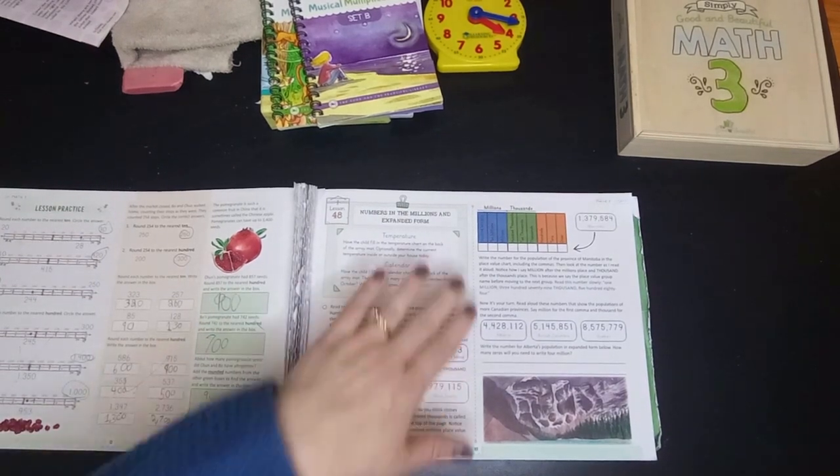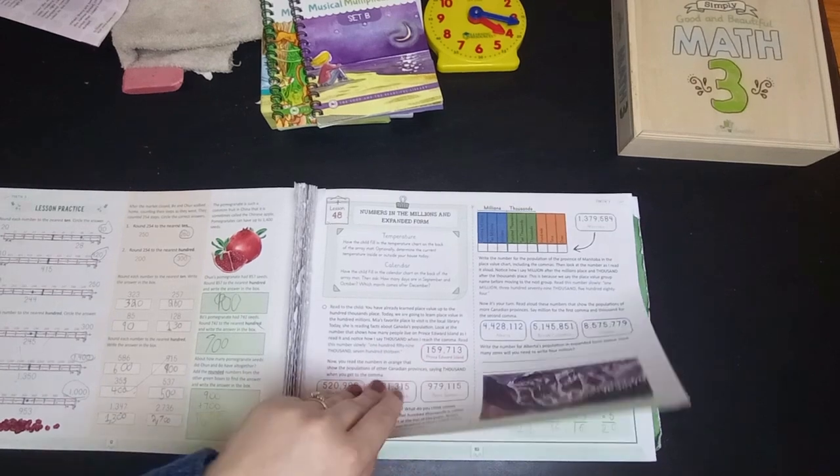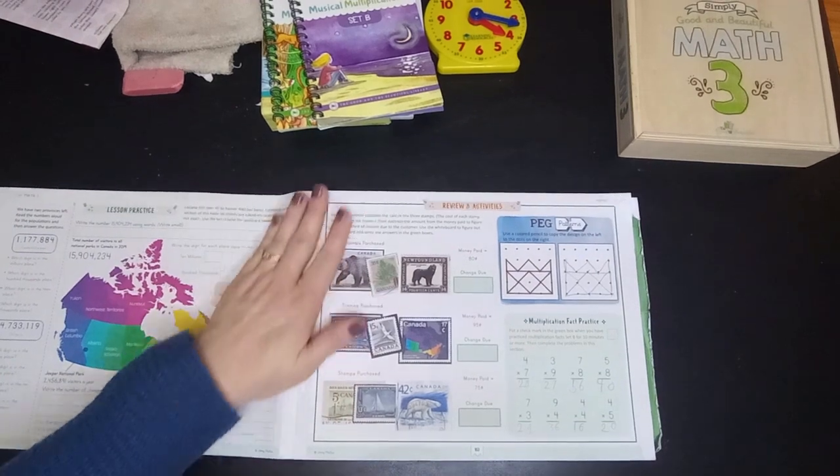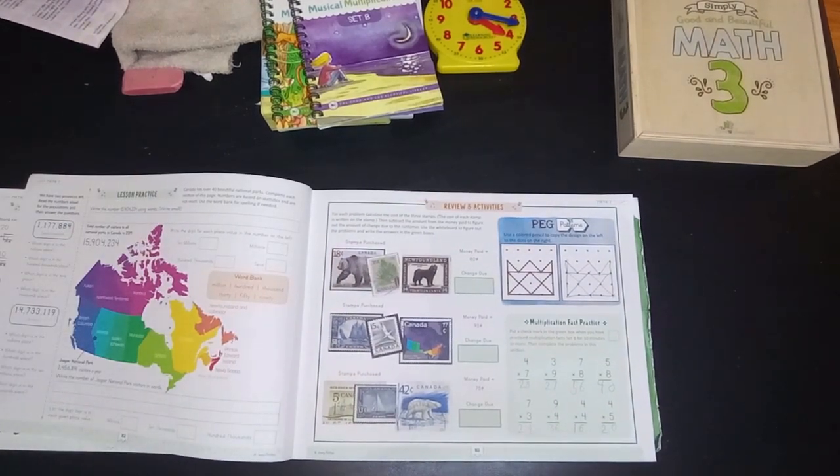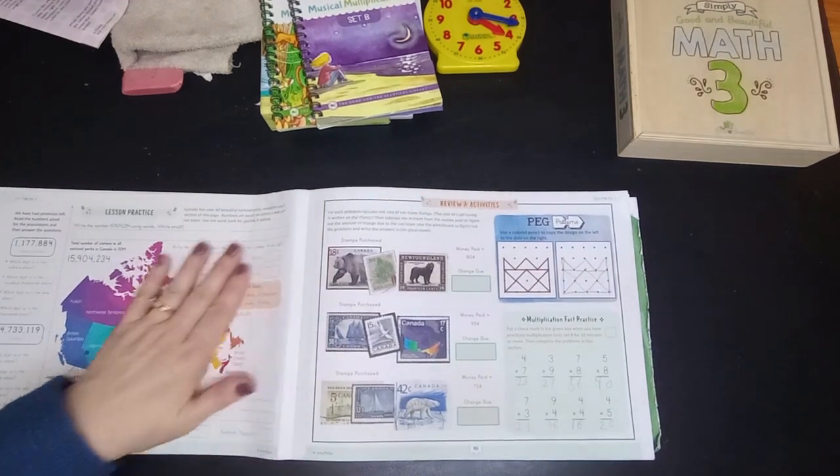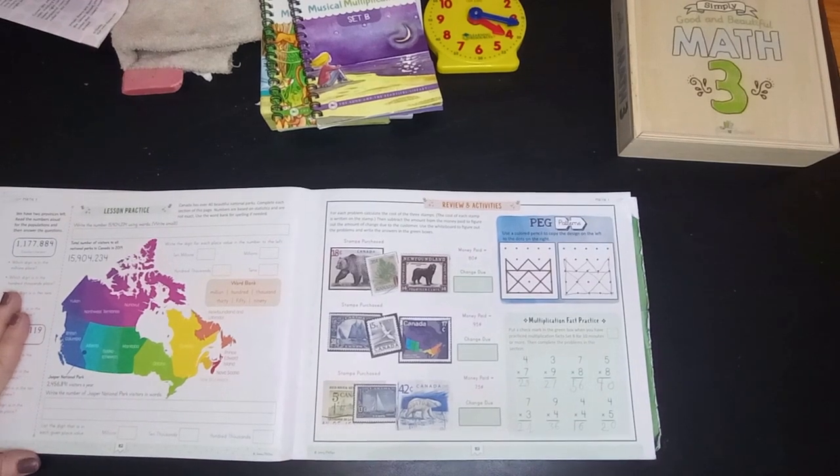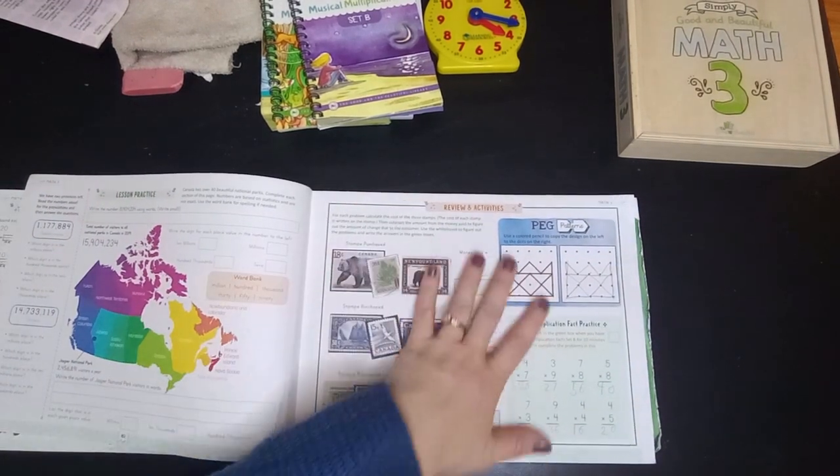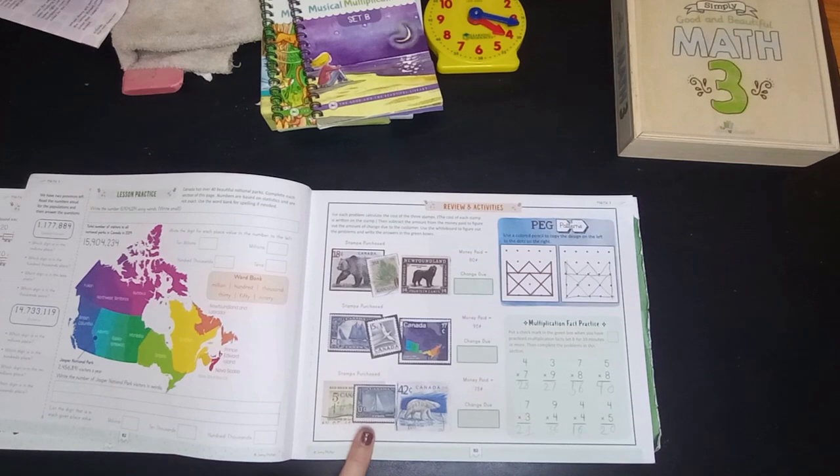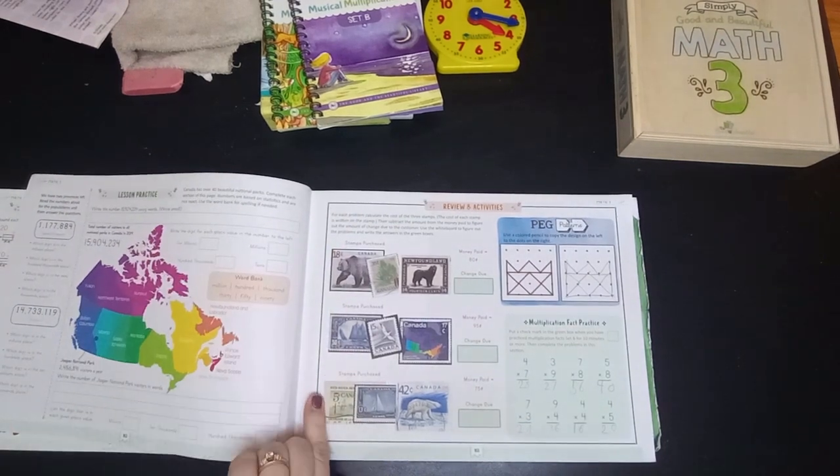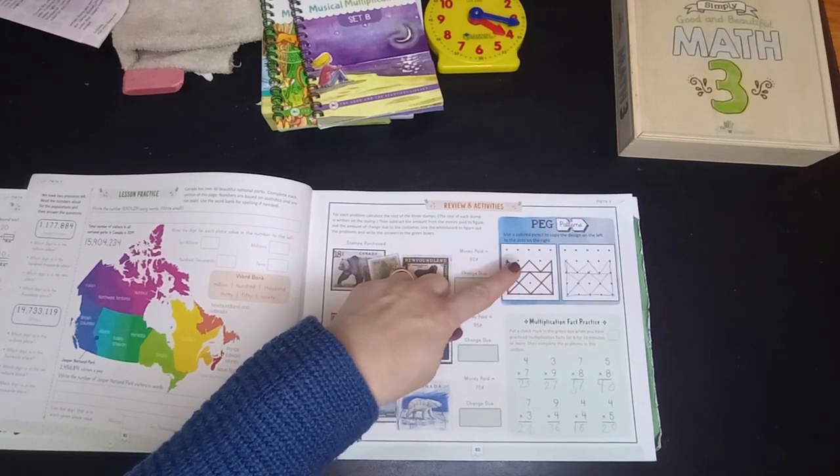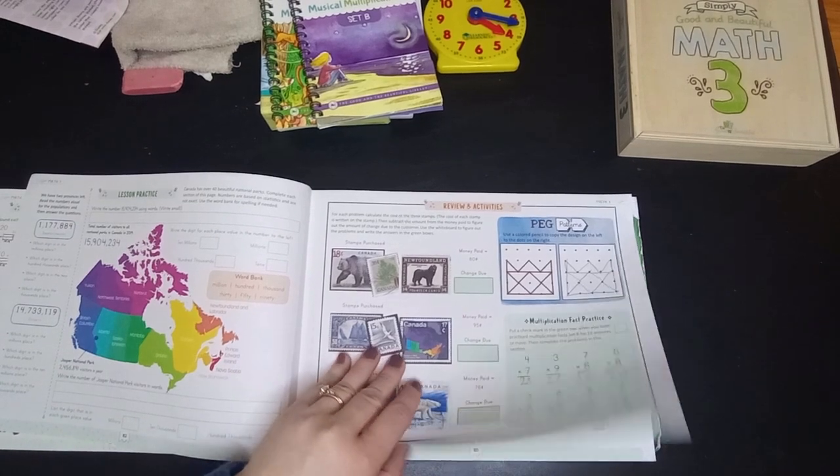And then here, so this is kind of fun, because it shows them a map, and they're starting to learn some other things and be exposed to some different things, like provinces in Canada, not something I normally would spend time talking to my kid about, but it's kind of nice, because knowing those is somewhat useful. And then again, the review and activities page, which she's done part of. These are really good for them to practice learning to draw and spatial reasoning and things. And then multiplication fact practice.